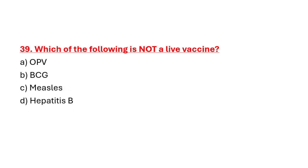Question 39: Which of the following is not a live vaccine? Option A: OPV. Option B: BCG. Option C: Measles. Option D: Hepatitis B. Correct answer is Option D: Hepatitis B.